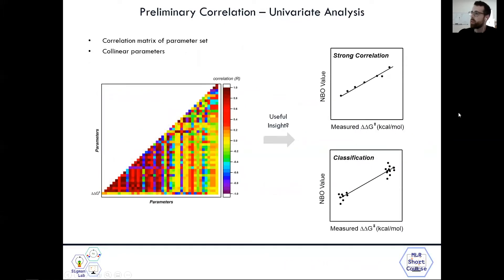So looking first at the preliminary correlation, the univariate analysis, we can produce this correlation matrix of our parameter set using the software I outlined in the last slide. And it really gives us a first sense of how these parameters relate to one another, how collinear they are, how they relate to their output as univariate correlation. We try to gain any useful insight we can. So for example, does an NBO value correlate really strongly with the measured Delta Delta G, which would be great. Or is it providing more of a classification in this case, more of a zero or one, which is also good to know just in general how it treats the data relative to the parameter.